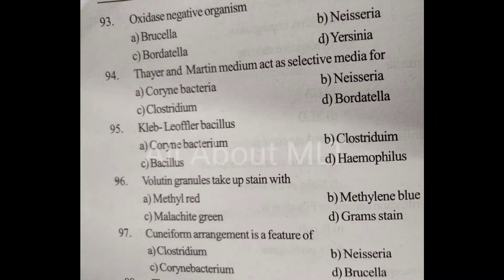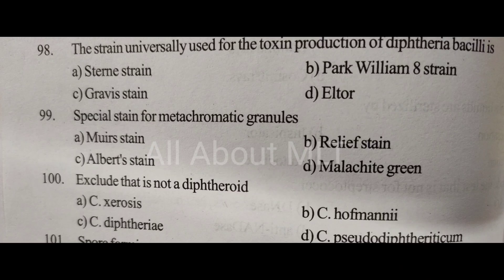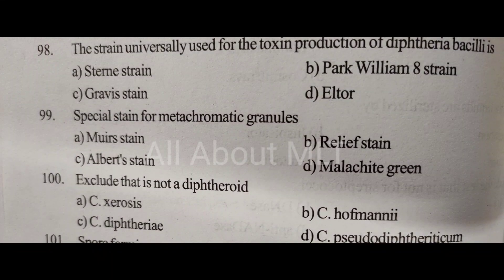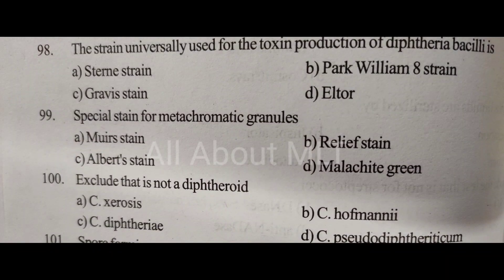The strain universally used for the toxin production of diphtheria bacillus is. Option A: Sterne strain. Option B: Park William 8 strain. Option C: Gravy strain. Option D: Elter. Answer is Option B: Park William 8 strain.